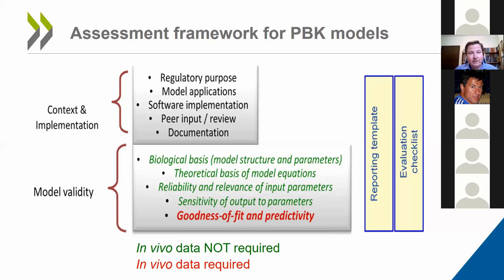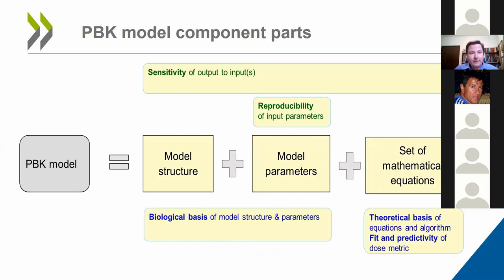We can think of the validity of the PBK model in terms of its component parts and the uncertainties associated with those components. A model is composed of the model structure — reflecting the anatomy and biology of the organism of interest — a set of model parameters, and a set of mathematical equations. There are uncertainties linked with all of these components, and it is essentially the way in which these uncertainties propagate through the model that determines the overall uncertainty in the model output, i.e., the reliability of prediction.